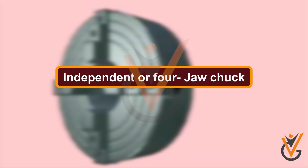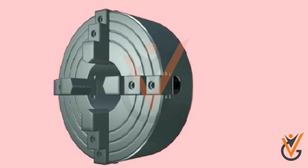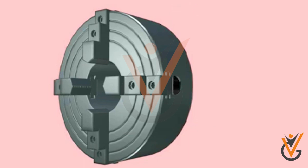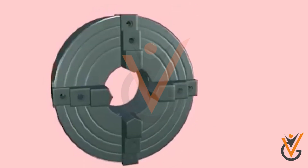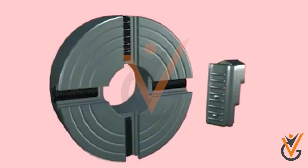Independent four-jaw chuck. It is used for irregular shapes, rough castings of square or octagonal shape, and such jobs where a hole is to be positioned off the center. It consists of four jaws, and each jaw is independently actuated and adjusted by a key for holding the job.